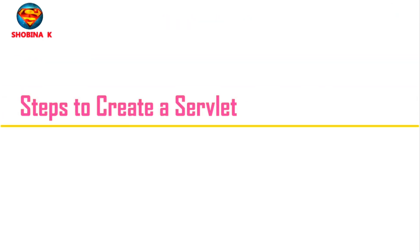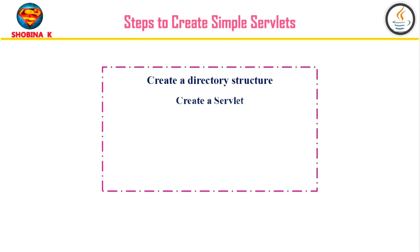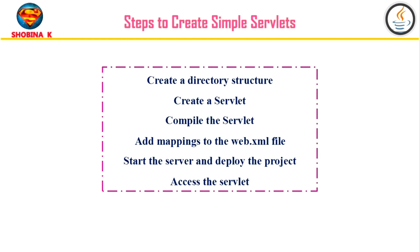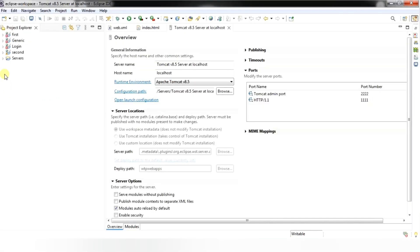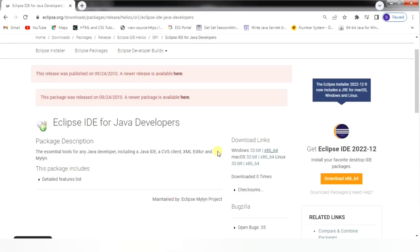Now we will see the steps to create a servlet. First, create a dynamic web project, then create and compile the servlet code. After that, copy the servlet class file and add the mappings to the web.xml file. Next, start the server, open the web browser, and request the servlet. To create a simple servlet, make sure you have installed Eclipse Enterprise Edition. I have already installed it and configured Apache Tomcat version 8.5. The download link for Eclipse Enterprise Edition is given in the description box.